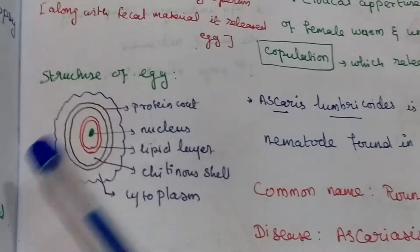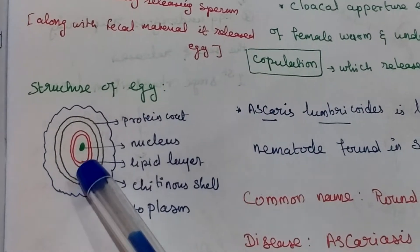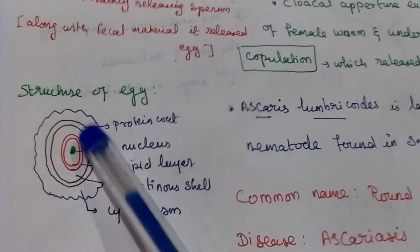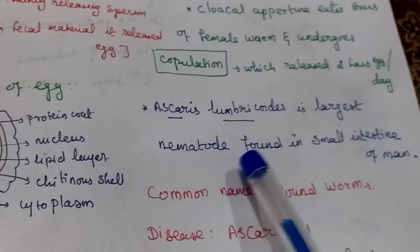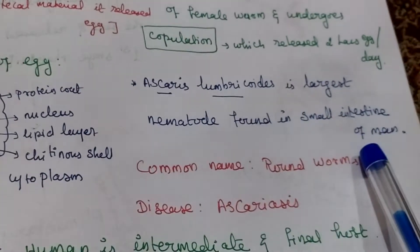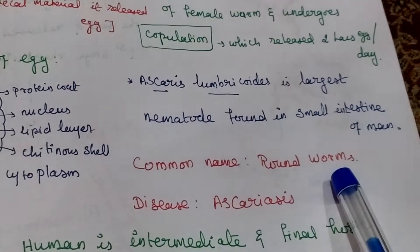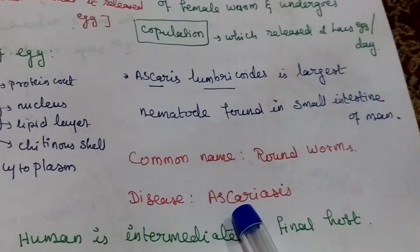This one is egg. It has nucleus, lipid layer, and protein coat. Ascaris is the largest nematode found in small intestine of man. Common name is roundworm. It causes disease called Ascariasis.